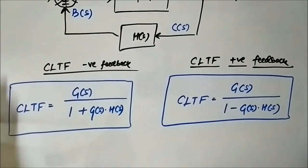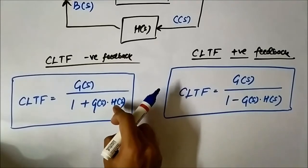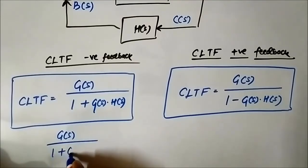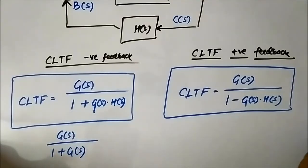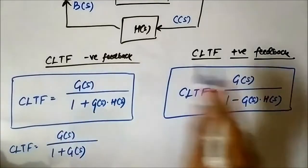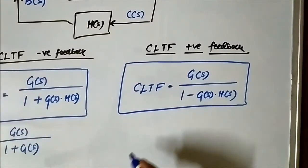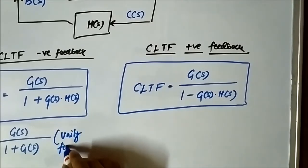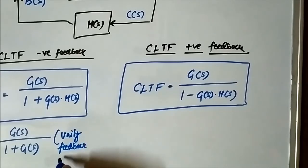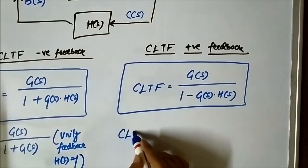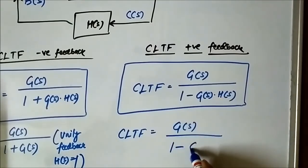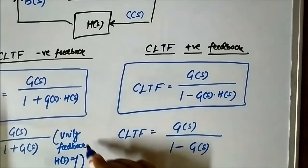For a unity feedback system where H(s) = 1, the negative feedback closed-loop transfer function becomes G(s)/[1 + G(s)], and the positive feedback closed-loop transfer function becomes G(s)/[1 − G(s)].